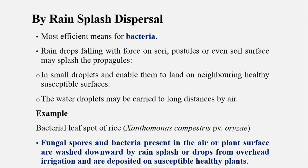Rain splash dispersal is the most efficient means for bacteria. Raindrops falling with force on sori, pustules, or soil surface cause a new plant body to develop and land on a healthy susceptible surface. Water droplets may be carried long distances by air. An example is bacterial leaf spot of rice, caused by Xanthomonas compestris pv. oryzae. Fungi, spores, and bacteria present on the air or plant surface are washed downward by rain splash or overhead irrigation and deposited on susceptible healthy plants.